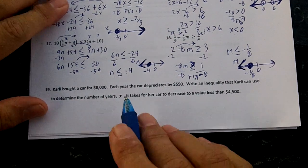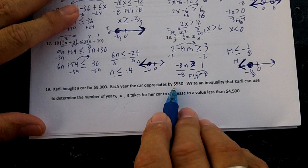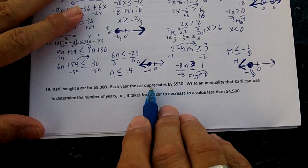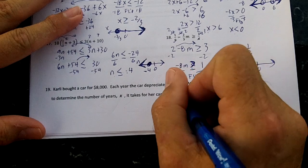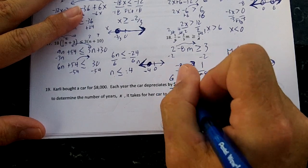Okay, Carly bought a car for $8,000. Each year the car depreciates by $550. That means it goes down by $550. That's going to be your growing number, but your growing number is going to be a negative $550.